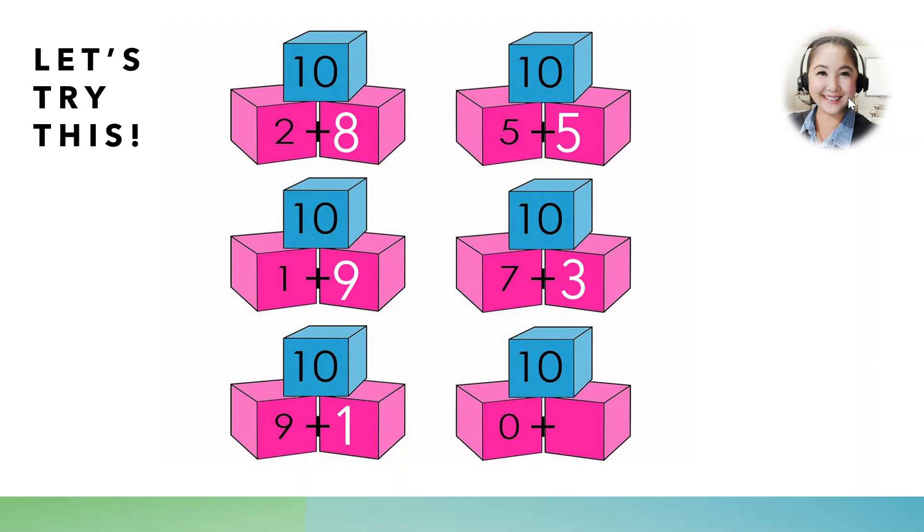Okay, 10. One part is 0. What is the other part? Very good! 10! 0 plus 10 makes 10. You know what, kids? There is also another property of addition. That when you add a number to 0, the answer is the number itself. Like 10 is the number added to 0. 10 plus 0, the answer is still the number. It's 10. Very good!